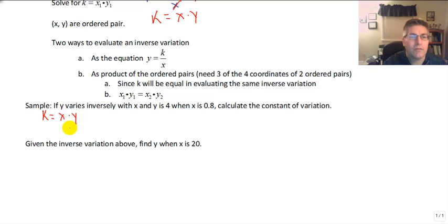So if y is 4 and x is 0.8, k will equal 0.8 times 4 or k equals 3.2. So our equation would be y equals 3.2 over x or xy equals 3.2. The product of any ordered pair in this inverse variation has to equal 3.2.